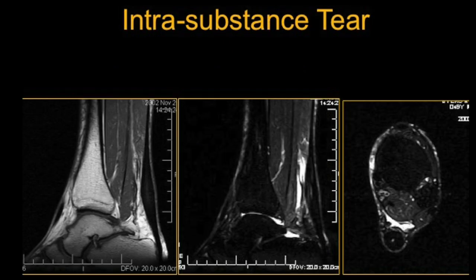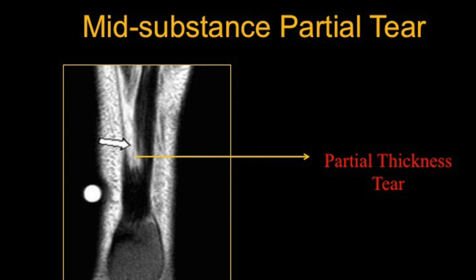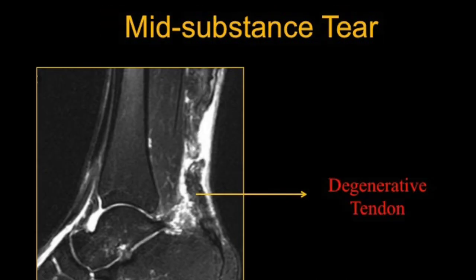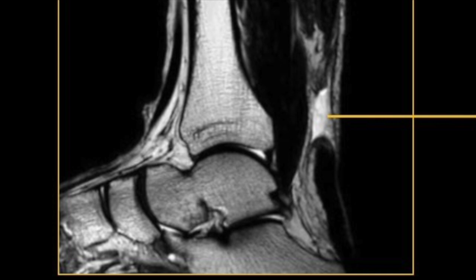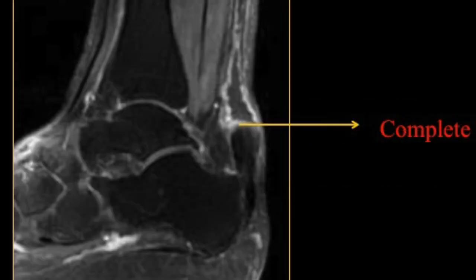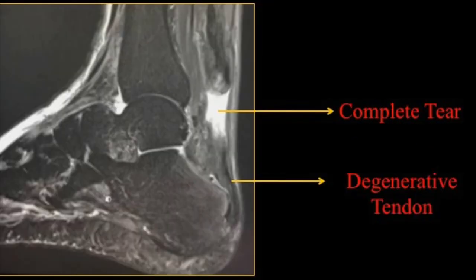This is a case of intra-substance tear with intra-substance signal changes in the mid-substance. This is a partial tear seen in coronal section where we see some tendinous fibers remaining while the other part is torn. This is a redundant tendon — another near-complete tear with no retraction. This is a mid-substance tear with a very degenerated appearance of the native tendons. Another fluid-filled gap in a mid-substance tear. This is another complete tear — the tendon is black, indicating a healthy tendon — but here is also a complete tear where the tendon does not look dark, indicating degeneration.